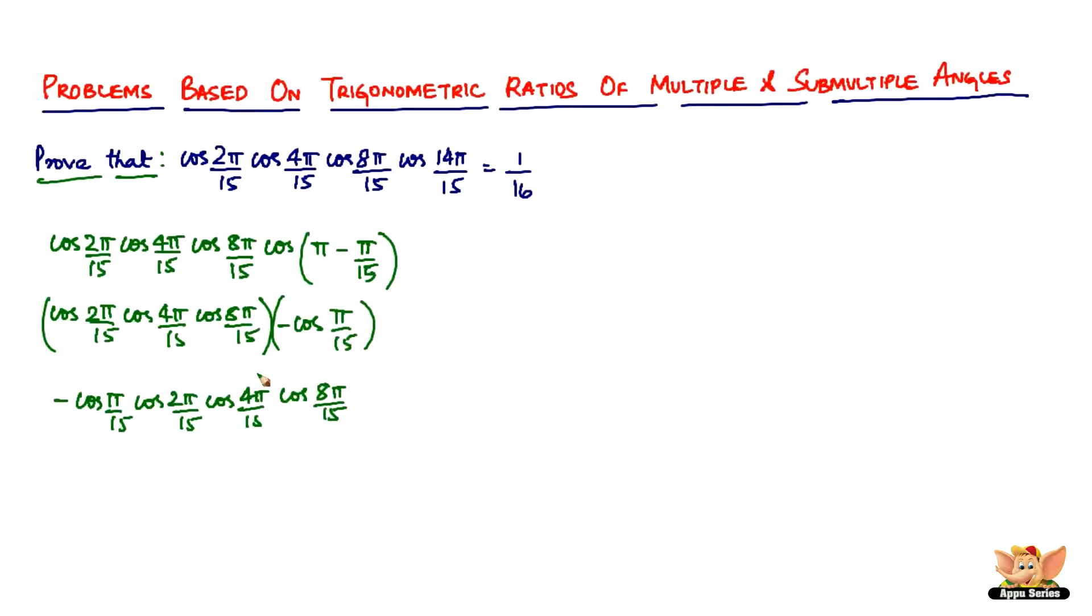So now what we'll do is to simplify things let's take π by 15 as equal to a, so when you do that this just becomes a little simpler. It just becomes minus cos a, cos 2a, cos 4a times cos 8a. So now what we can further write this as is minus cos a times cos 2a, cos 2 square a and cos 2 cube a.